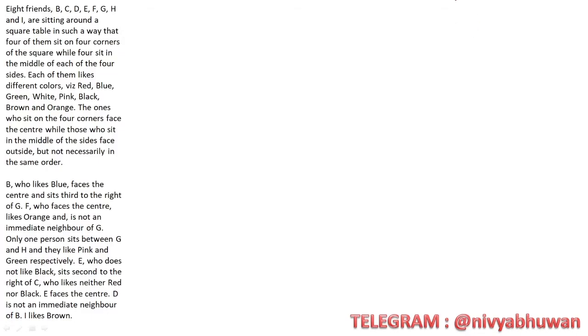Now, eight people are sitting at a square table. First we will make a square. Four of them sit at the corners of the square while four sit in the middle of the sides. First you have to sit on the corners: one, two, three, and four. And four sit in the middle.